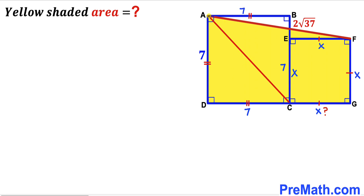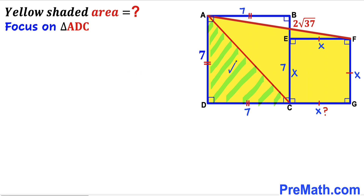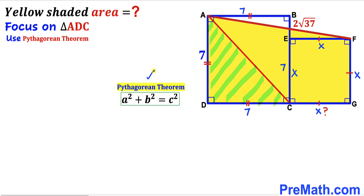We can see that AC is the diagonal of the larger square. Focusing on right triangle ADC, we apply the Pythagorean theorem to find the length of diagonal AC. Our formula is a² + b² = c², where the hypotenuse is AC and the two legs are 7 and 7. So we get 7² + 7² = AC².